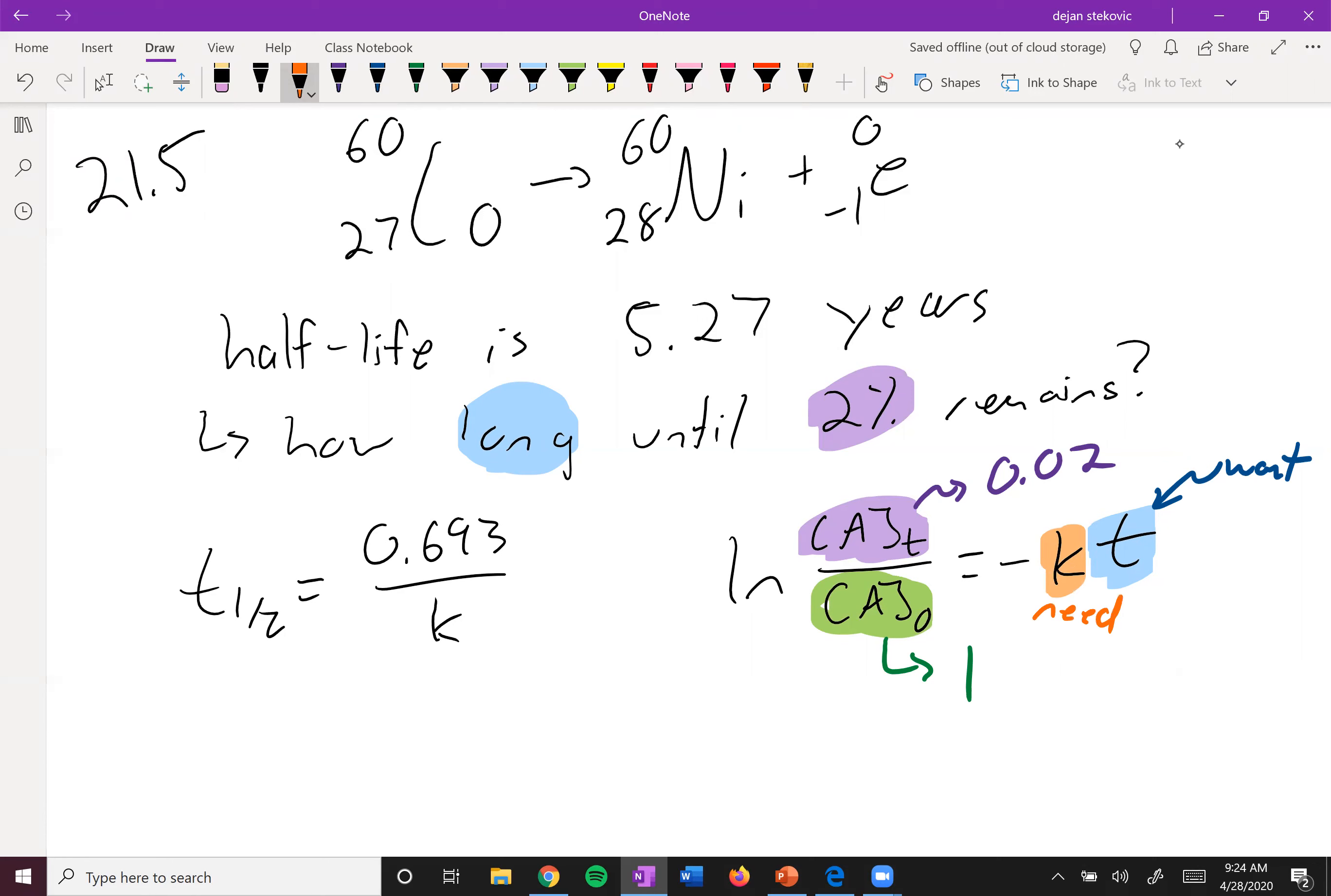We can't solve for two variables at once, so we have to look at our other equation. We have k, 0.693, and t₁/₂. Are we given t₁/₂? That's the half-life, so yes, we're given 5.27 years. Take this 5.27, plug that in, solve for k, which gives you 0.131.